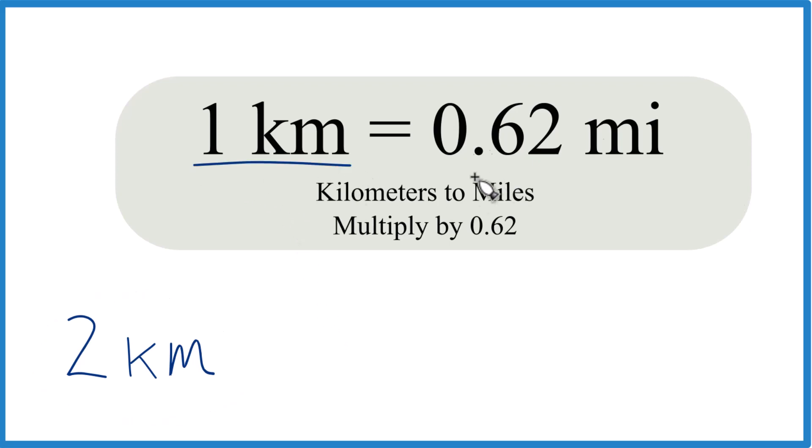So first off, 1 kilometer is equal to 0.62 miles, just about 0.62 miles. It's actually 0.62137. Some people even just use 0.6 so they can do it in their head.